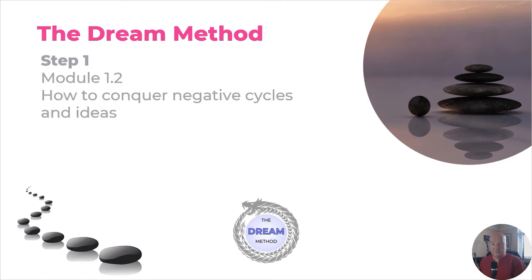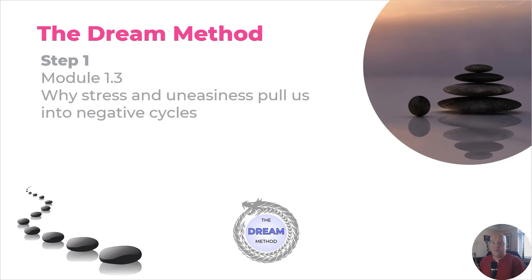Module 1.2 is how to conquer your negative cycles and ideas — so important in today's world where there's so much negativity and toxicity around. Module 1.3 addresses why stress and uneasiness put us into negative cycles. Everybody seems to be stressed and uneasy in today's world, creating negative cycles that go round and round. This is what we need to get rid of, and we can do this in module 1.3.